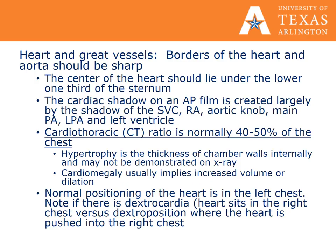The borders of the heart and aorta should be sharp. The center of the heart should lie under the lower one-third of the sternum. The cardiac shadow on an AP film is created largely by the superior vena cava, right atrium, aortic knob, main pulmonary artery, left pulmonary artery, and left ventricle. The cardiothoracic ratio is normally 40–50% of the chest. Hypertrophy refers to chamber wall thickness not seen on X-ray, whereas cardiomegaly implies increased volume or dilatation. Note if there is dextrocardia — the heart will sit in the right chest — versus dextroposition, where the heart is pushed into the right chest by a pulmonary or traumatic event.